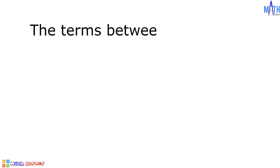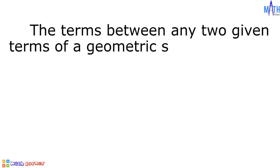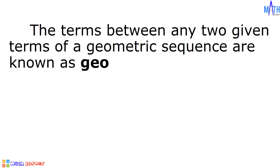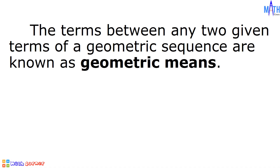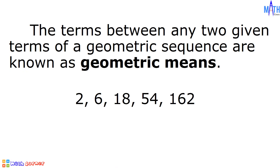Let us begin by its definition. The terms between any two given terms of a geometric sequence are known as geometric means. In the example 2, 6, 18, 54, and 162, the terms 6, 18, and 54 are the three geometric means between 2 and 162.